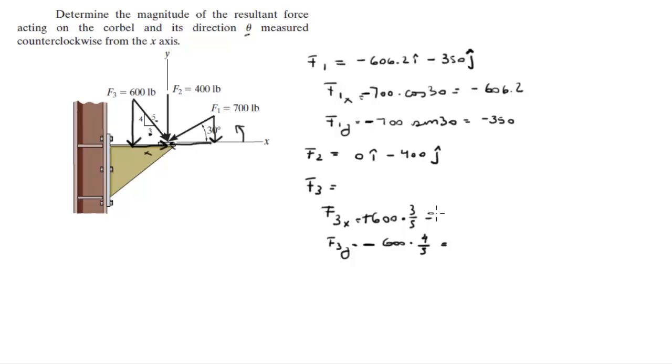And once you calculate this, you get that this is equal to 360 and this is equal to negative 480. So this is 360i minus 480j. So this is F3, this is F2, and this is F1.